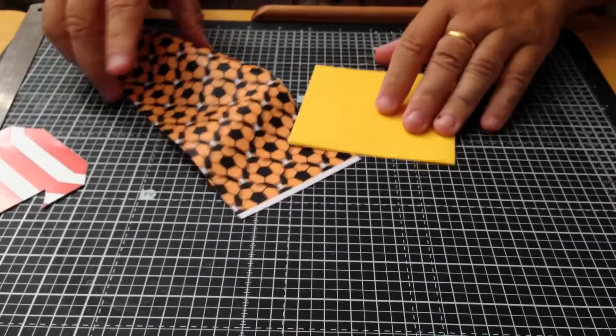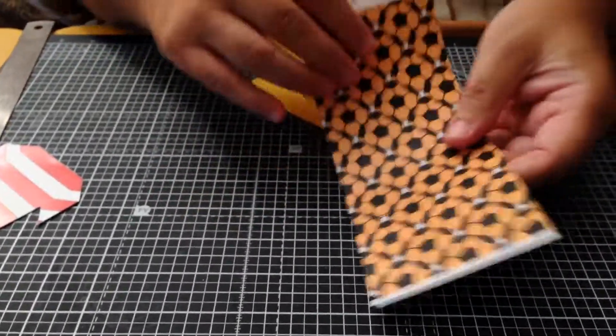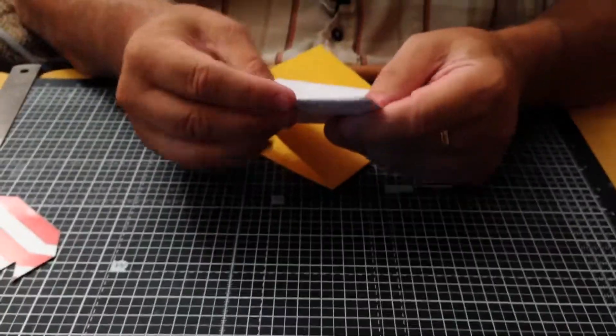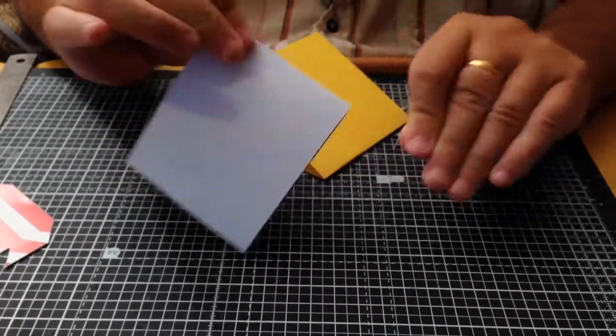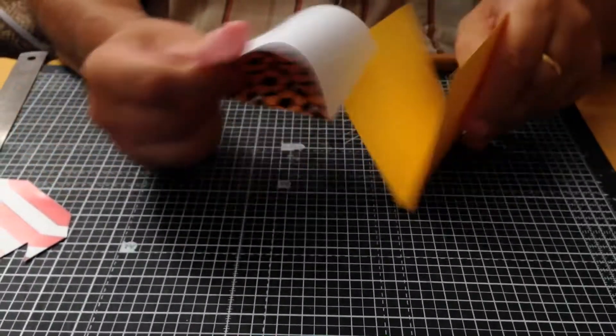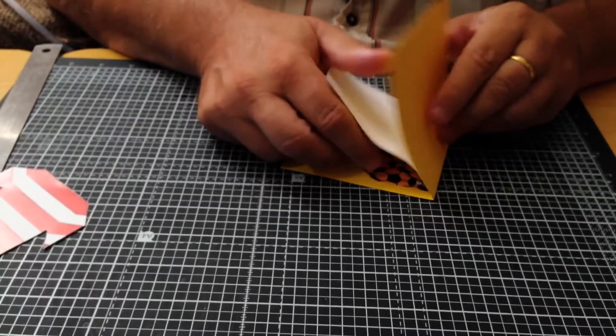And then we're going to do the same with this - this is going to be the background pattern which is going to be the insert. That's going to slip inside there as I cut it out.